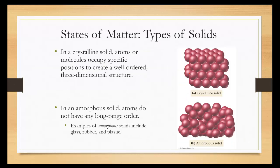There are two different types of solids. There's crystalline solid and amorphous solids. Crystalline solids are atoms or molecules that occupy specific positions to create a well-ordered three-dimensional structure.